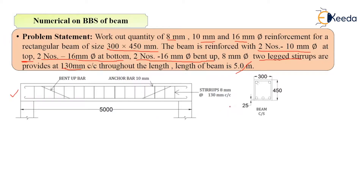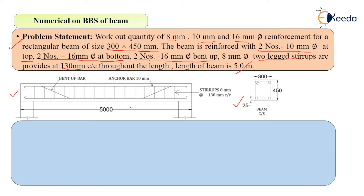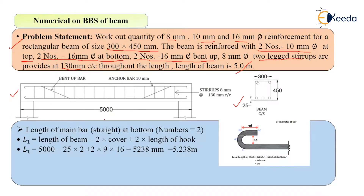They have shown the cross section with one bent up bar and anchor bar. I have taken both the statement and the cross section because in an exam they will give you either the statement or also the cross section. But if they don't give you the cross section, you should understand from the wording of the problem statement the various types of bars used. So let's solve this numerical.